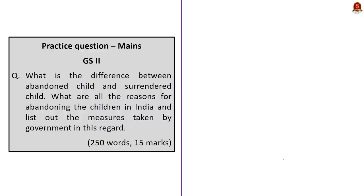In this discussion, we first saw the difference between abandoning a child and surrendering a child. Then we saw the steps taken by the government to avoid abandonment of children. After that, we saw the procedure by which a child is declared legally free for adoption. And finally, we saw a few facts about the Central Adoption Resource Agency.